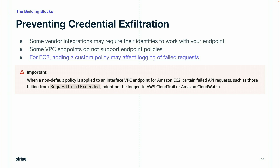A couple of things to look out for. First, it's uncommon, but some vendor integrations require external principals to work within your network and use your endpoint — in that case, you'll have to make an exception for those principals or endpoints. Second, not every type of VPC endpoint supports custom endpoint policies; for example, the CloudTrail endpoint does not support custom policies, and these cannot be changed from full access. Third — and it's kind of a weird one — specifically for the EC2 endpoint, if you add a custom policy, this may cause some failed API requests to not be logged to CloudTrail.